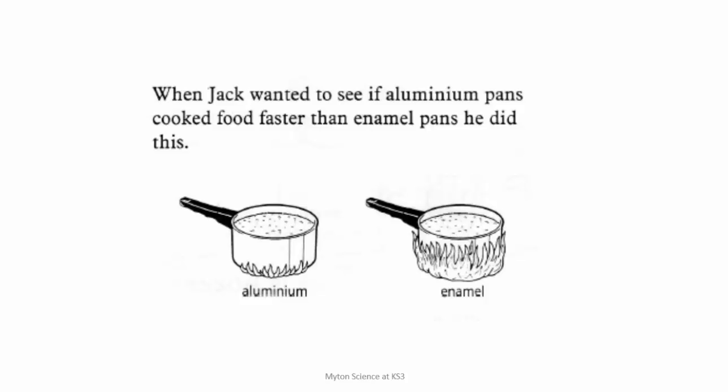Jack wants to see if aluminium pans cook food faster than enamel pans. What's wrong with this? If you thought it was because the enamel one had more heat underneath it, then you were correct — in the picture that's supposed to indicate a greater flame. So the enamel one is actually going to probably heat faster purely because more heat has been applied to it. That would be an unfair test. You'd need to make sure that you heat them both at an even rate.